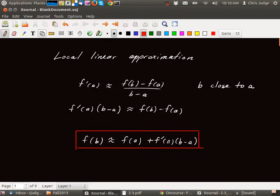So what it says is that if you know f prime of a, and you know f of a, and you know b minus a, then you can have an estimation of f of b. Okay, let's see that in an example.